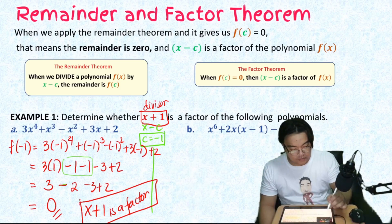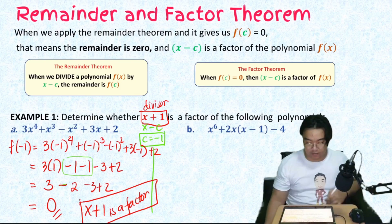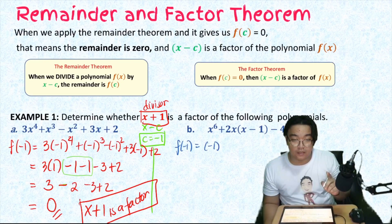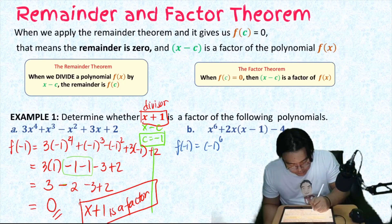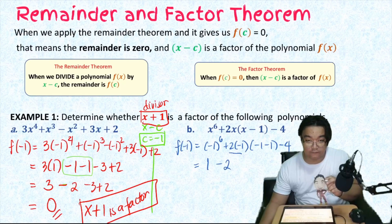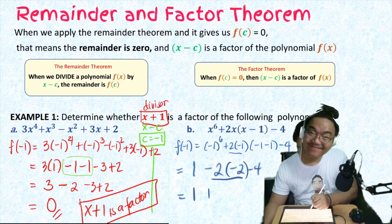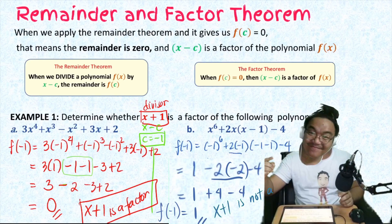Now letter (b): check if (x + 1) is a factor of x⁶ + 2x(x - 1) - 4. We substitute f(-1). Tip: when substituting a negative, always use parentheses to avoid confusion. So: (-1)⁶ + 2(-1)[(-1) - 1] - 4. Simplifying: 1 + 2(-1)(-2) - 4 = 1 + 4 - 4 = 1. The remainder is 1, so (x + 1) is not a factor.